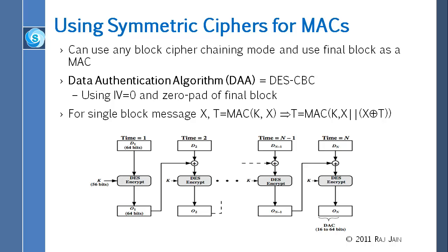There is a clear break in this security: if you just have one block in the message, there is no chaining. If there is no chaining, then your hash will be equal to E(k, x). Here x is your message and k is the key. So whatever is the encryption of x with key k is your hash. Now if somebody modifies this message x to x concatenated with x XOR t — that is, x followed by x XOR t.